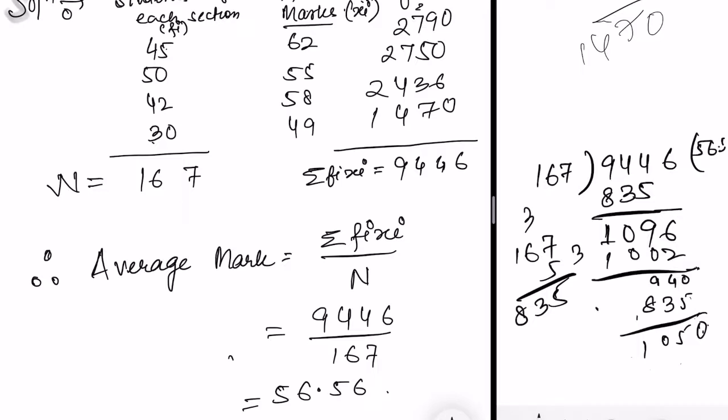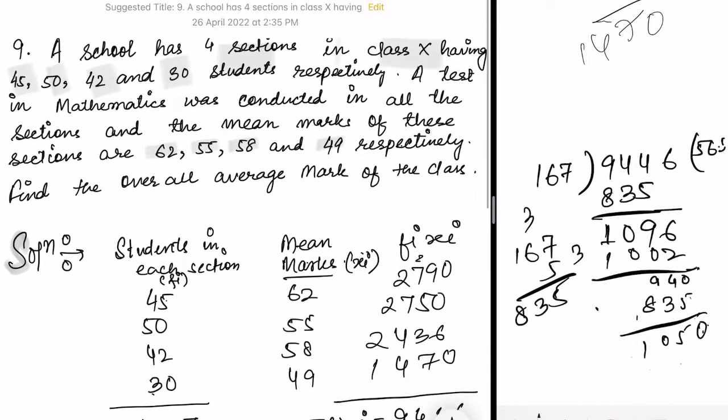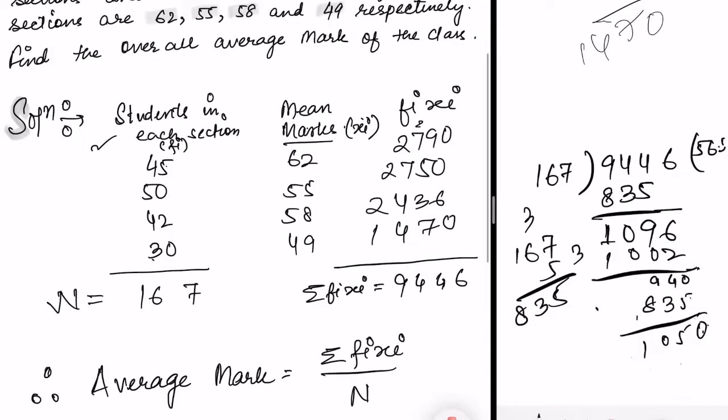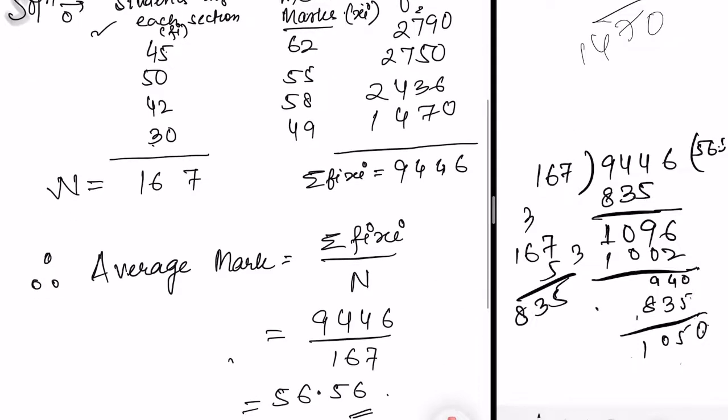For those who haven't understood, which one to take as fi and which as xi? Number of students, number of students will always be taken as frequency. Frequency means number, a certain number repeating. So number of students take as frequency, and marks you take as xi. After finding the summation of fi×xi and N, you divide fi×xi by N and you get the answer. Thank you, we will meet in the next video.